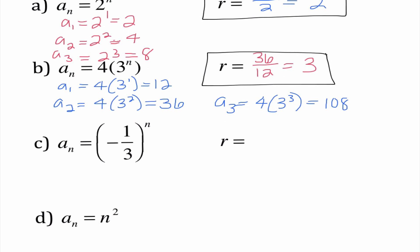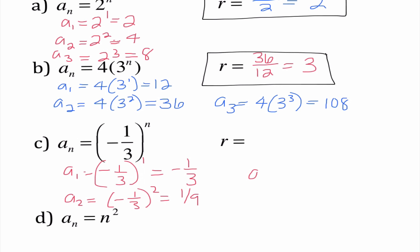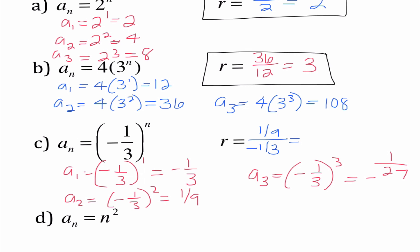For part C, a₁ is negative one-third to the first power, which is negative one-third. a₂ is negative one-third squared, which becomes one-ninth. a₃ is negative one-third cubed, which is negative one over 27. To find our ratio, I do one-ninth divided by negative one-third. Dividing by a fraction is like multiplying by the reciprocal, and I get negative one-third as our ratio.